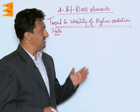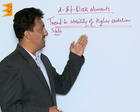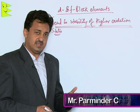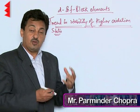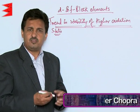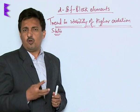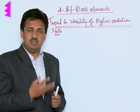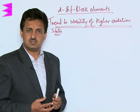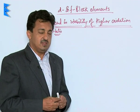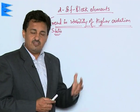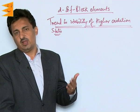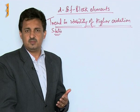Let us study the trend in the stability of higher oxidation states. Fluorine and oxygen are very strong oxidizing agents and they can oxidize any element or metal to their highest oxidation states. What we find is that transition elements also exist in their higher oxidation states in the form of their fluorides and oxides.